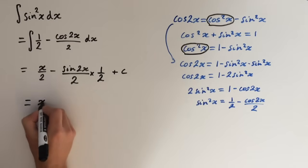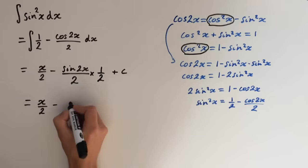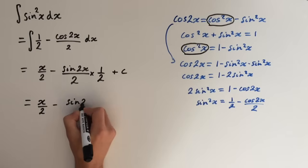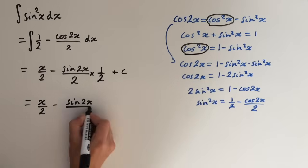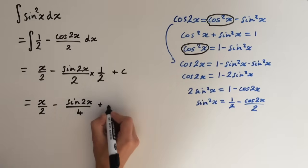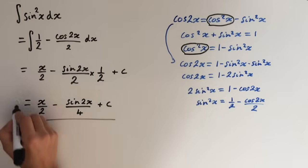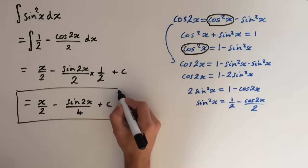So this gives us x over 2 minus sin of 2x over 4 plus c. And there you go, the integral of sin squared x.